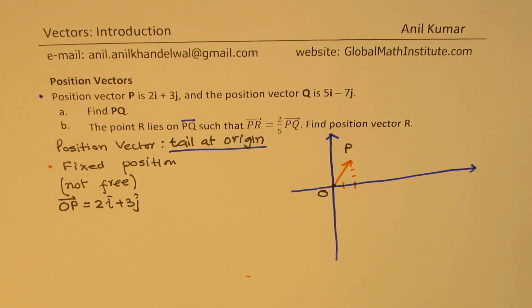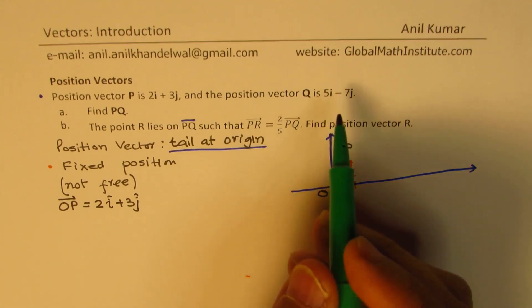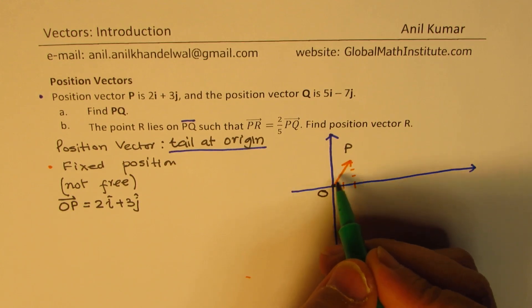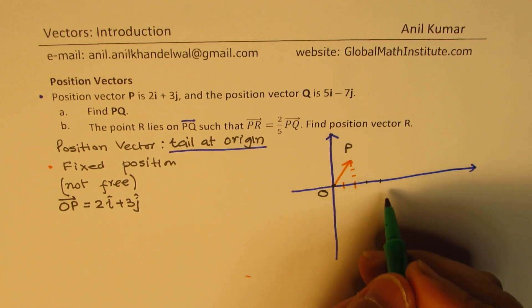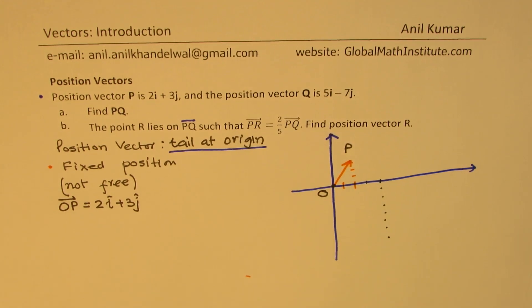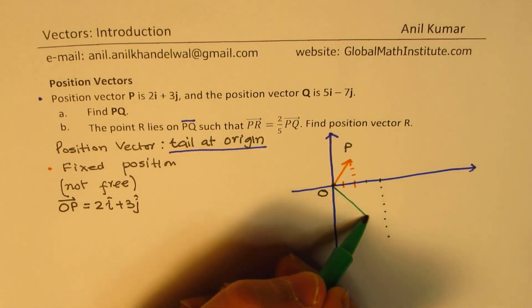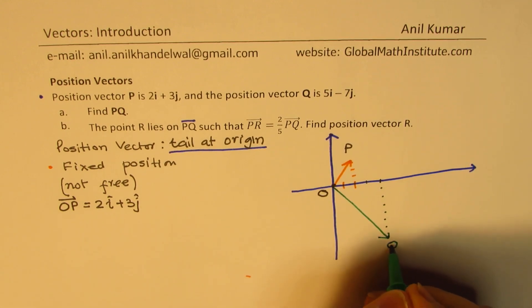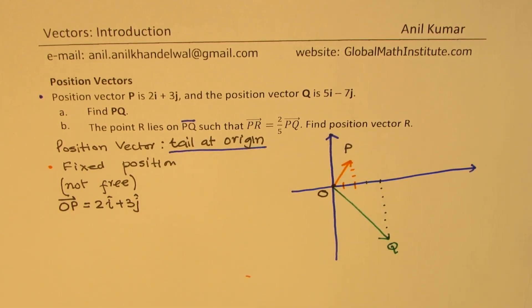Now let's show where is the vector Q, which is 5i minus 7j. So again, tail is fixed here. One, two, three, four, and this is 5. Minus 7: one, two, three, four, five, six, seven. So that becomes minus 7. So tail at the origin and head right there represents the vector Q. So that becomes the vector Q for us.